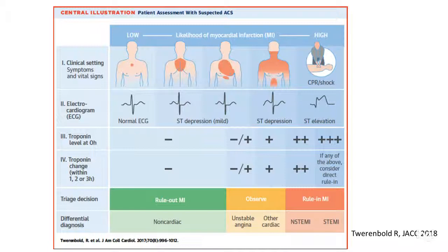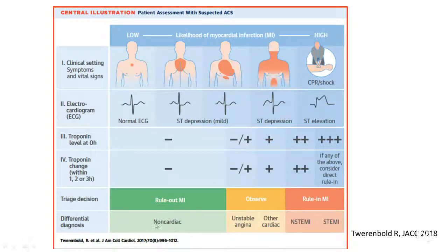After four sets of troponins, if all have been negative, the patient can be ruled out for MI and may be safely discharged home — meaning they did not have a myocardial infarction. They may need evaluation for other things, but we know they didn't have an MI.